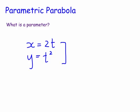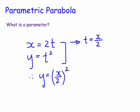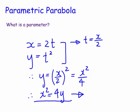Let's eliminate t. We know t is equal to x over 2, and y equals t squared, so therefore y equals (x/2) squared, which is x squared on 4. Therefore x squared equals 4y. Another way of saying that is y equals one quarter of x squared. That is the curve which had been deconstructed into those two parametric coordinates — x as a function of t, and y as a function of t.